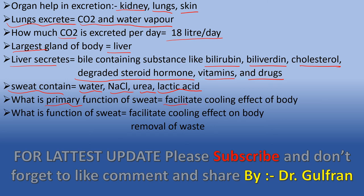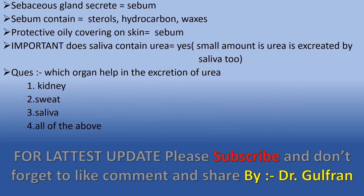Two questions can be formed from sweat: the primary function of sweat is only the cooling effect on the body, but the functions of sweat include both the cooling effect and removal of waste products. Sebaceous glands secrete sebum, which contains sterols, hydrocarbons, and wax, forming a protective oily covering on the skin. Saliva also contains urea — a small amount of urea is excreted by saliva. Which organs help in excretion of urea? The answer is all of the above: kidney (major), sweat, and saliva.